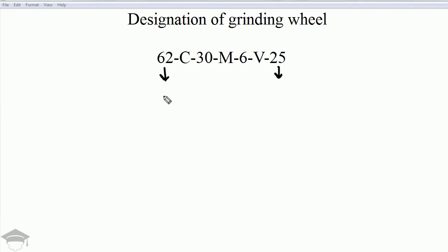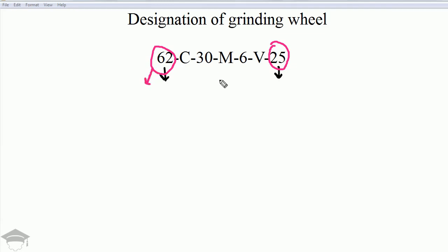are the manufacturer's symbol, because there are various companies worldwide which produce grinding wheels. These first and last numbers give information about who the manufacturer is — for different manufacturers these numbers can be different.